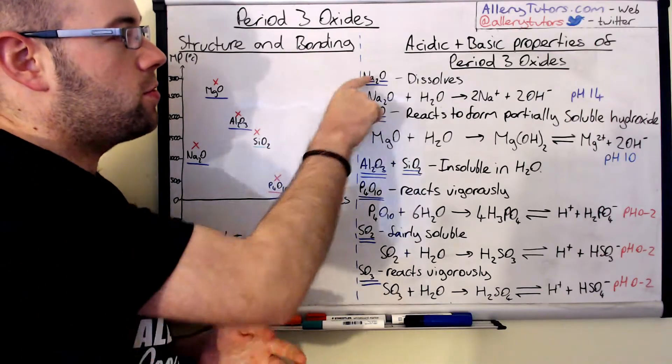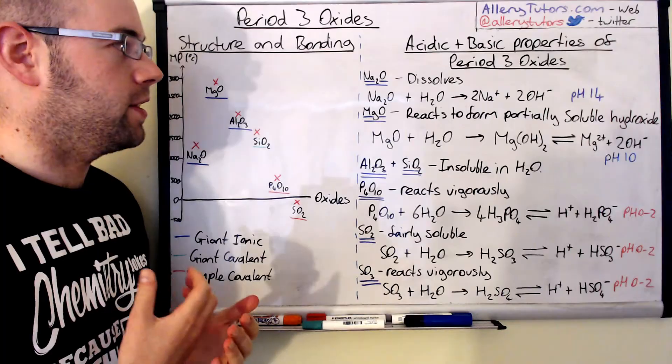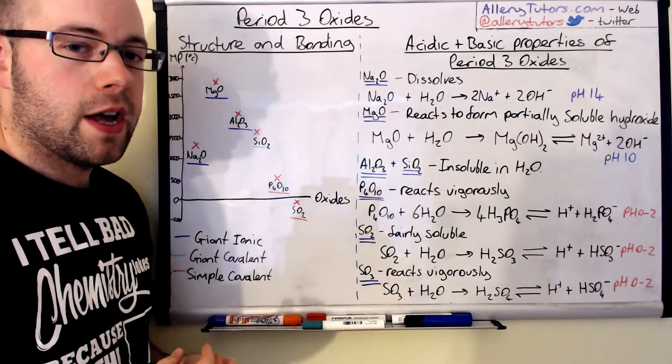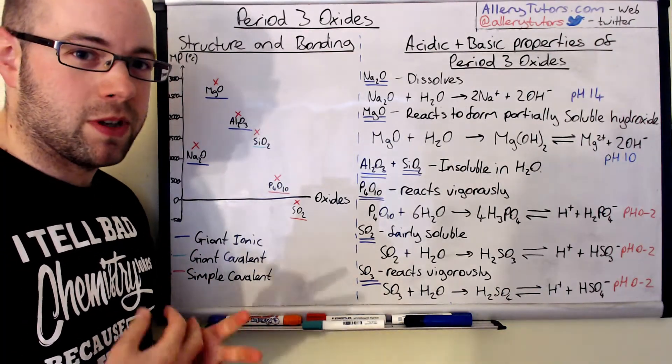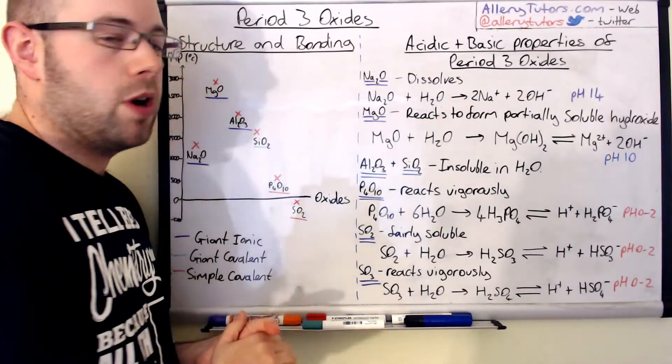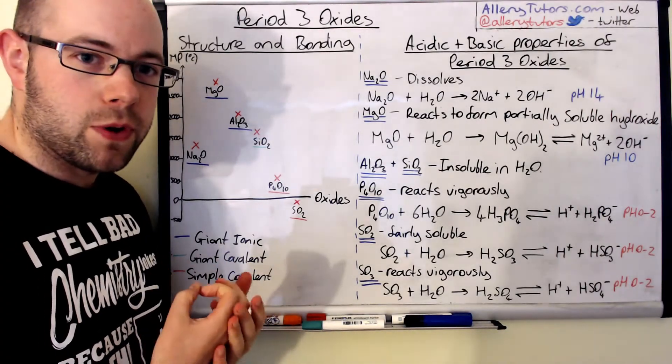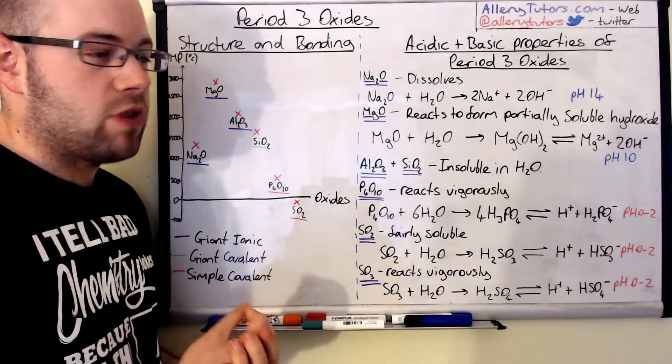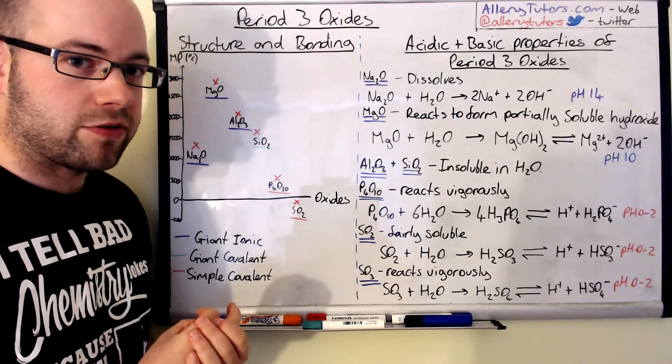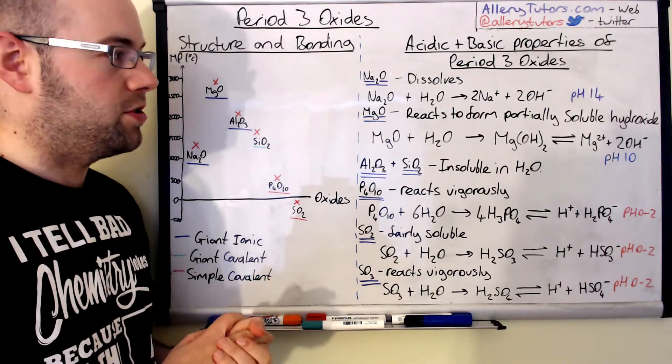So we're going to look at sodium oxide first. We said this is ionic, a very giant ionic structure. This will dissolve like most ionic compounds will, they're readily soluble in water, and it will dissolve to form sodium plus and 2OH minus, hence the ionic character of this. And there's a pH of 14 as it forms a readily soluble sodium hydroxide compound and so therefore forms an alkaline solution.